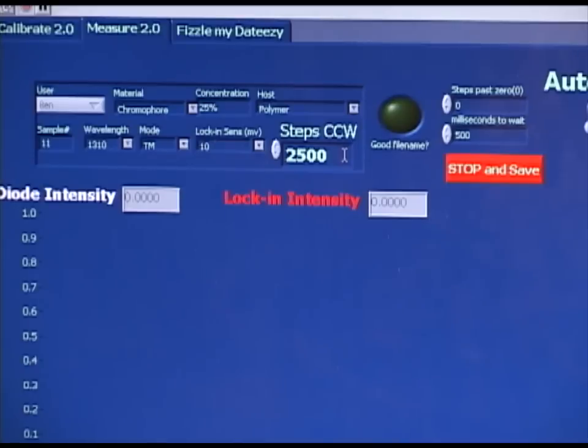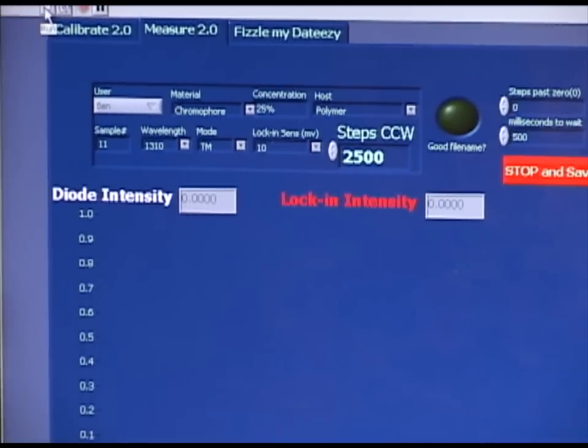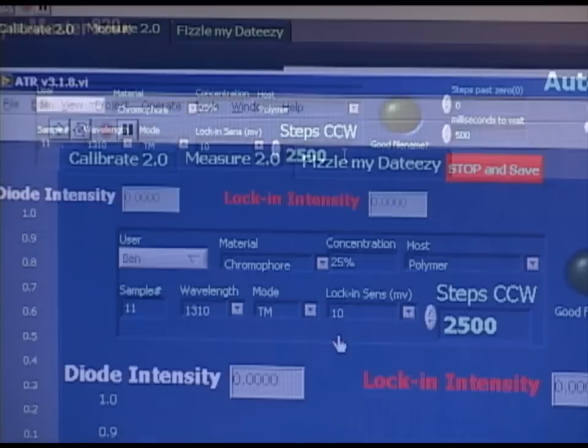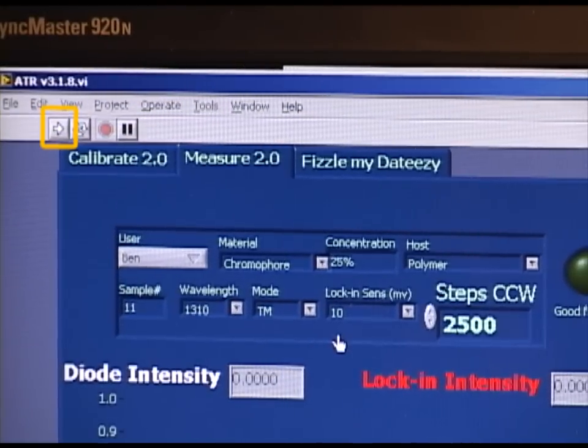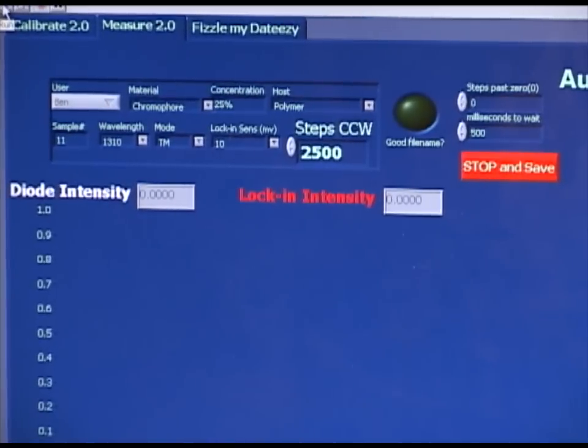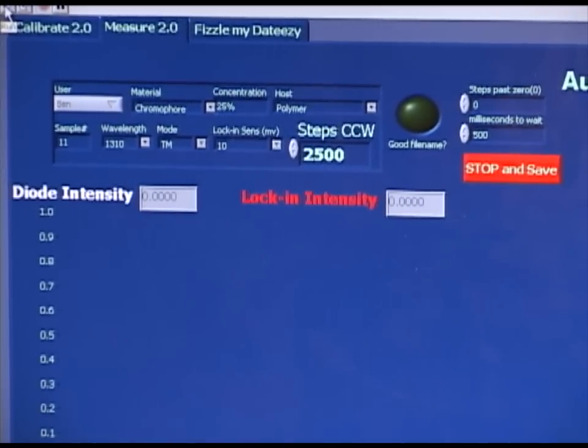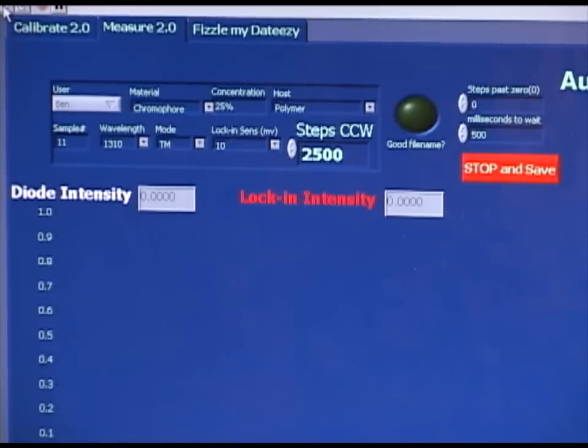Once the information has been inputted, the instrument is ready to begin measuring. To do this, we click the Run button in the upper left-hand corner and the stage motor will begin rotating very slowly across a range of angles indicated by Steps Counter-Clockwise, searching and recording modes that it encounters.